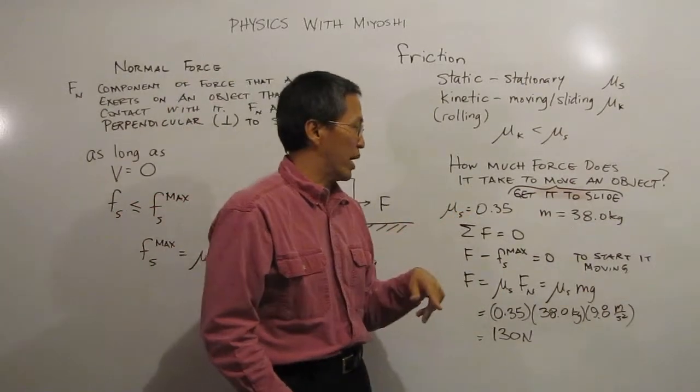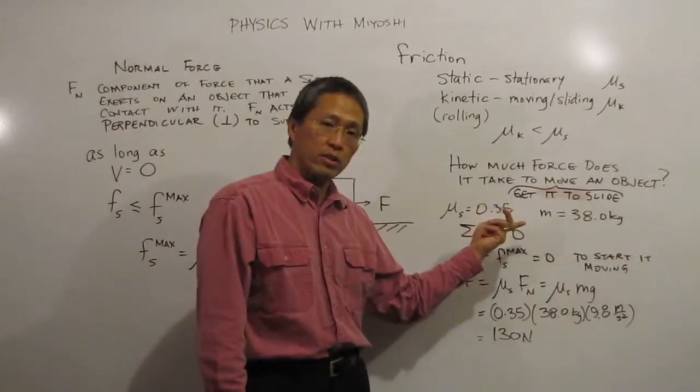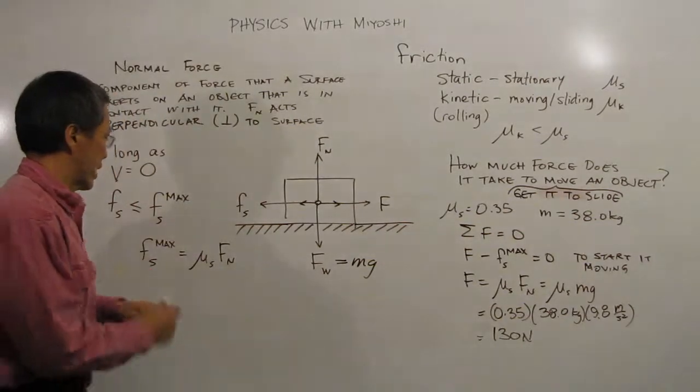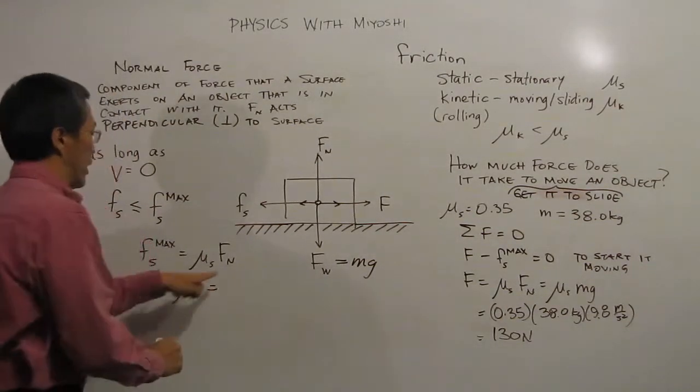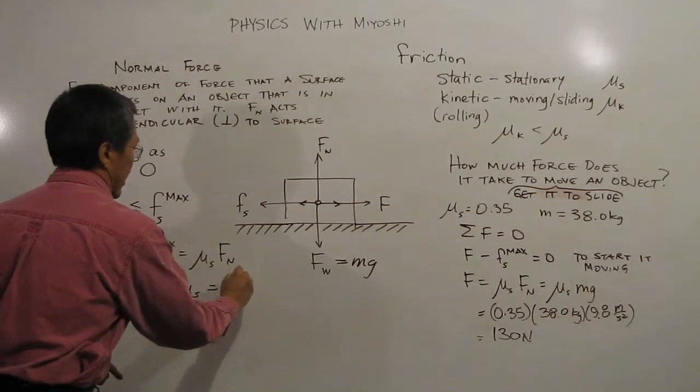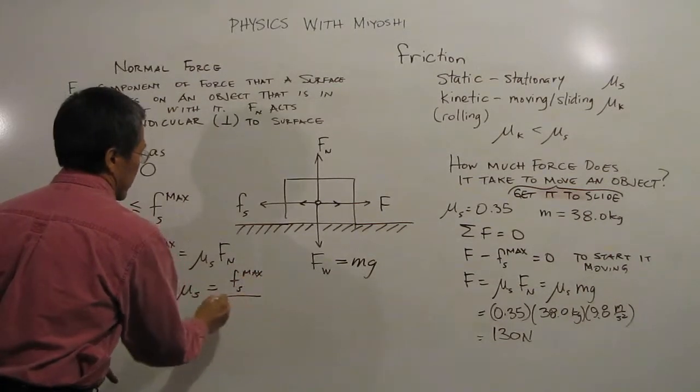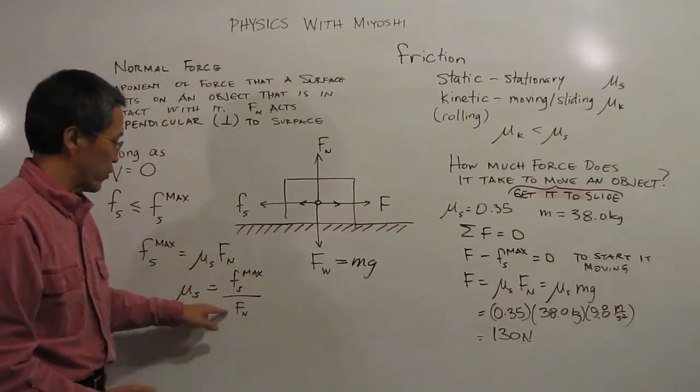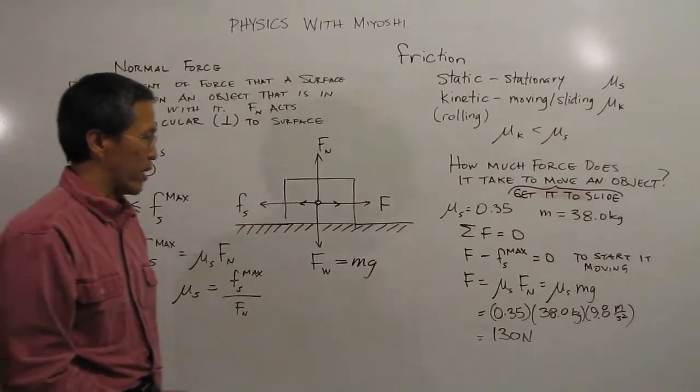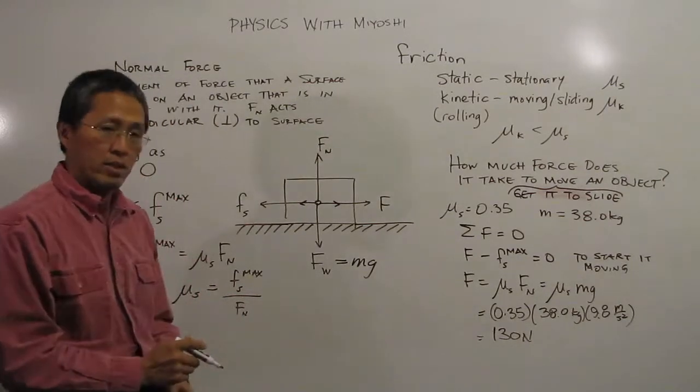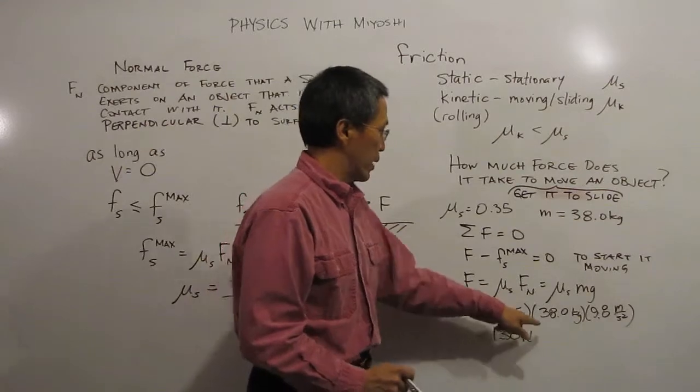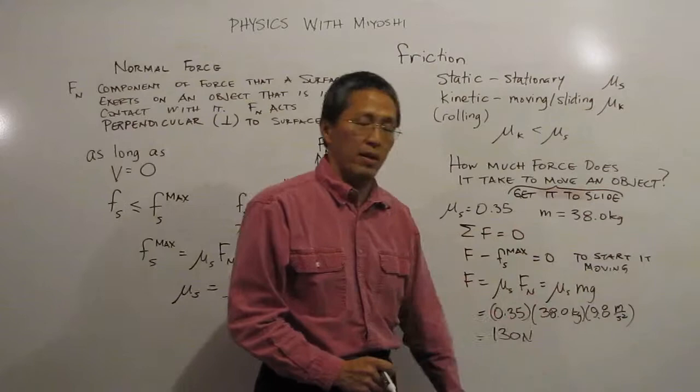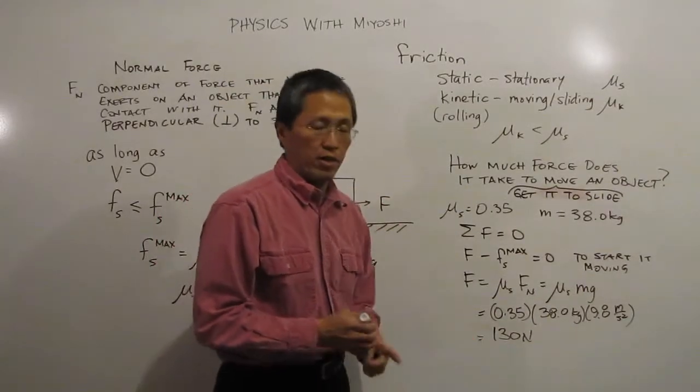Remember that that is just m times g. And that would be then in the case of my example here, we have the static friction is 0.35. There are no units to coefficient of friction because if we arrange this equation we can see that μs is just my static friction max divided by my normal force. Normal force, that's a force in newtons, that's a force in newtons, so the newtons divide out and I'm left with a unitless coefficient. Anyway I multiply that guy by my 38 kilograms in this case and multiply that by the acceleration due to gravity and I get 130 newtons.